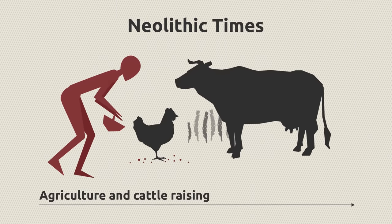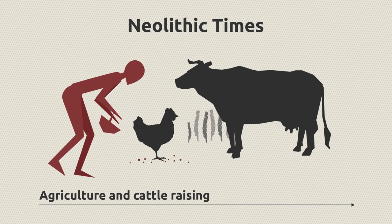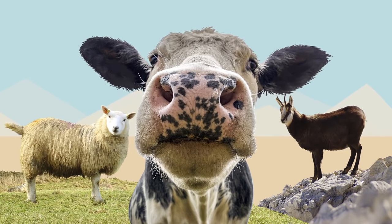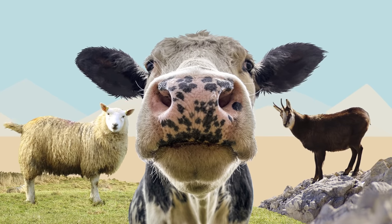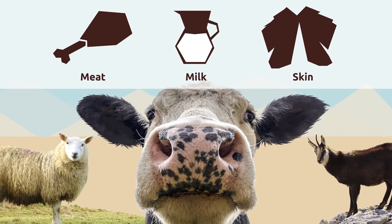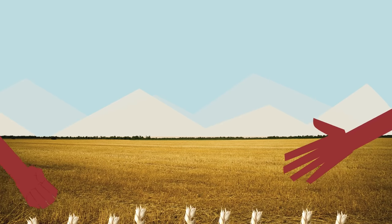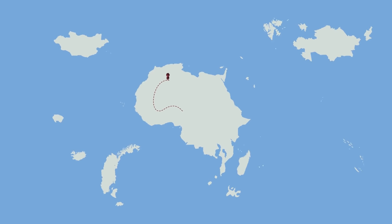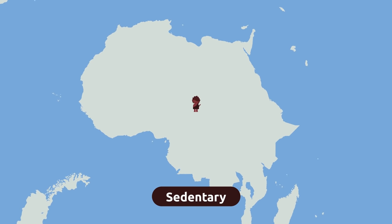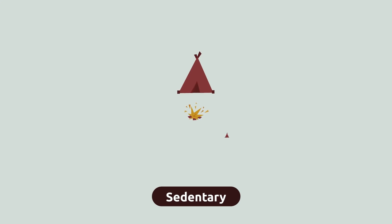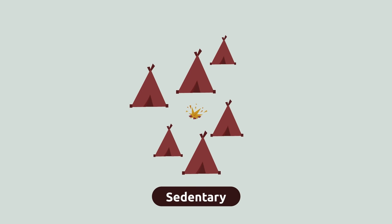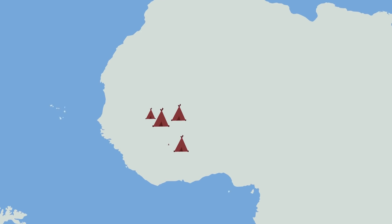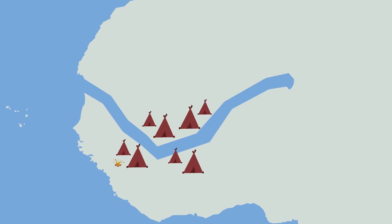The beginning of Neolithic times is marked by the practice of agriculture and cattle raising. During this stage, humans started to domesticate animals like goats, sheep, and cows. These first farm animals were kept for their meat, milk, and skin. Neolithic people also started to cultivate the land to grow food, planting cereals like wheat or barley. For this reason, they stopped being nomads and their lifestyle became sedentary — they didn't have to travel to look for food.